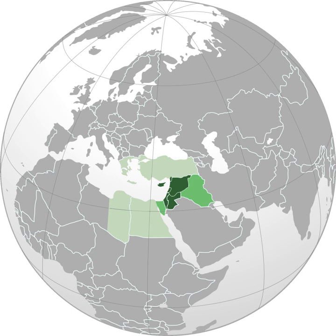Most populations in the Levant speak Levantine Arabic (Shami), usually classified as the varieties North Levantine Arabic in Lebanon, Syria, and parts of Turkey, and South Levantine Arabic in Palestine and Jordan, each of which encompasses a spectrum of regional, urban, and rural variations. In addition to these varieties, a number of other dialects of Arabic are spoken in the Levant area, such as Levantine Bedawi Arabic and Mesopotamian Arabic.